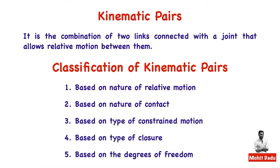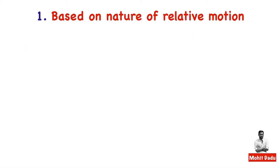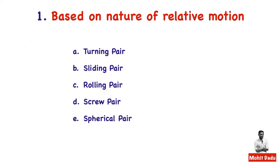First, we will take the classification of kinematic pairs based on relative motion — what kind of relative motion is happening between the links forming a pair. Based on this criteria, we have five categories: turning pair, sliding pair, rolling pair, screw pair, and spherical pair.